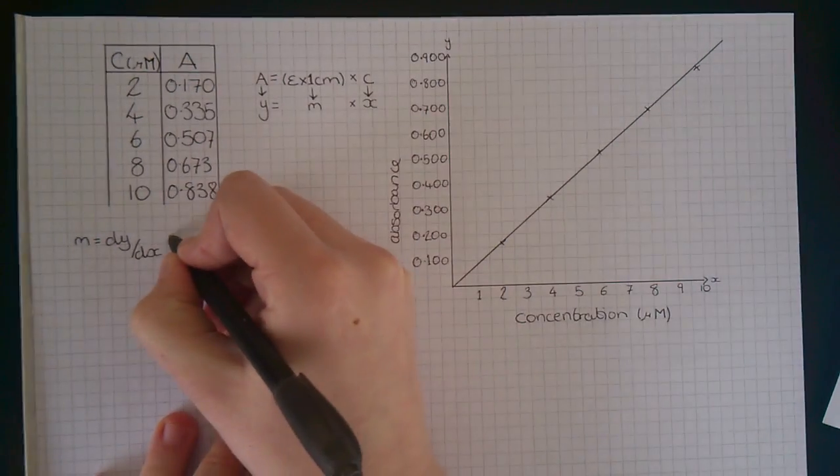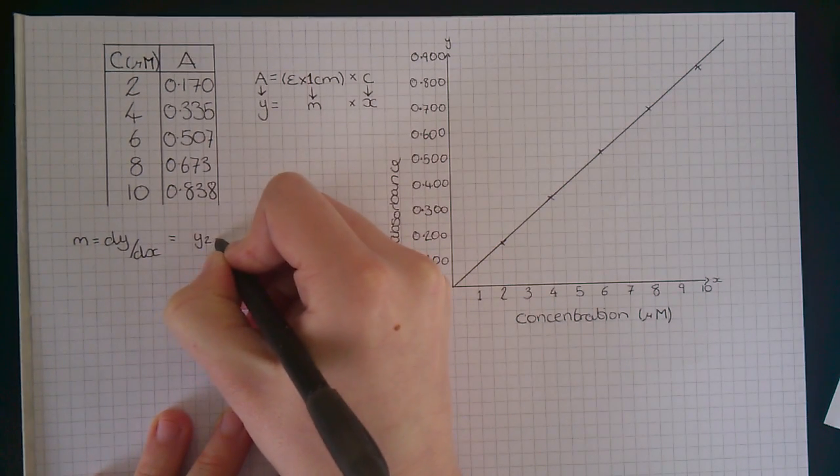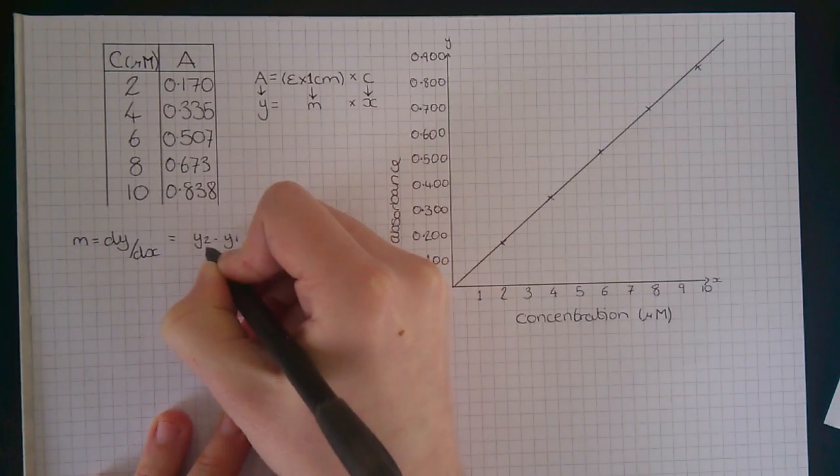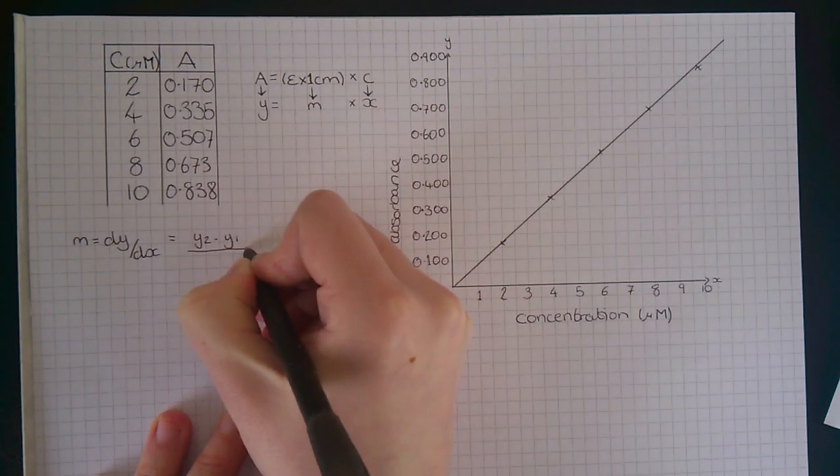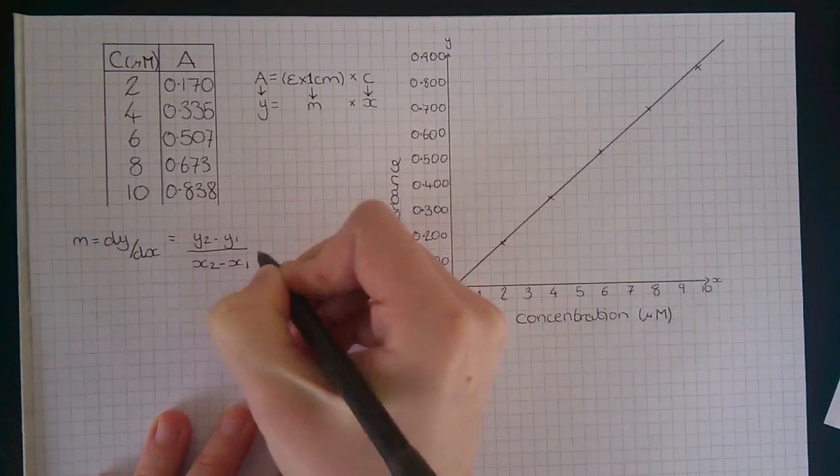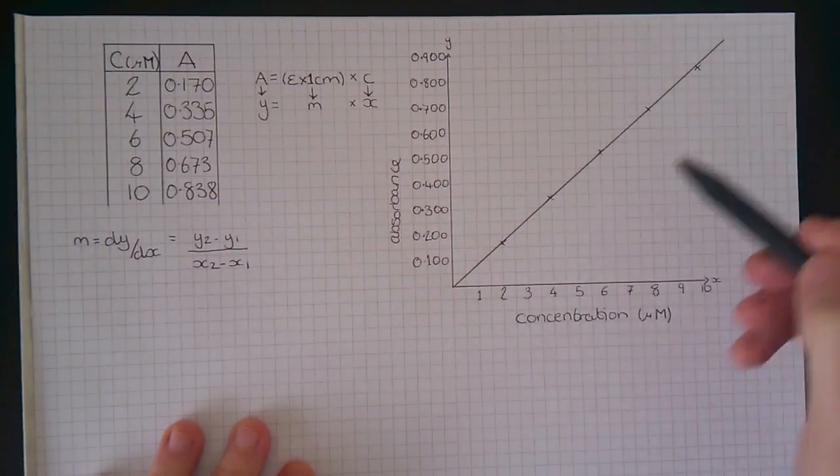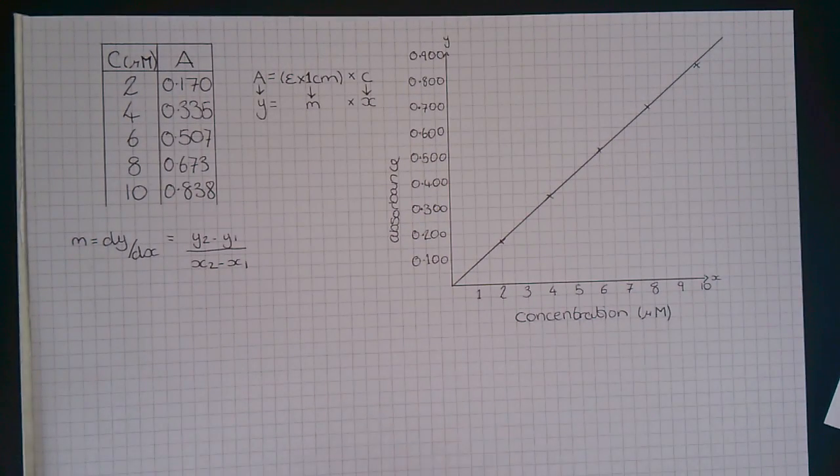We're also going to use the same equation from that video, which is y2 minus y1 divided by x2 minus x1. The x and y values are corresponding values from the line of best fit. Always use points on the line of best fit when working out a gradient.